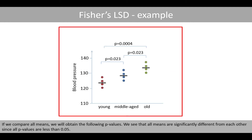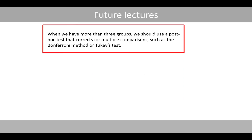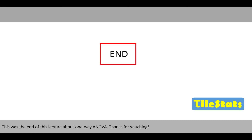If we compare all means, we will obtain the following P-values. We see that all means are significantly different from each other since all P-values are less than 0.05. When we have more than three groups, we should use a post-hoc test that corrects for multiple comparisons, such as the Bonferroni method or Tukey's test. This was the end of this lecture about one-way ANOVA. Thanks for watching.